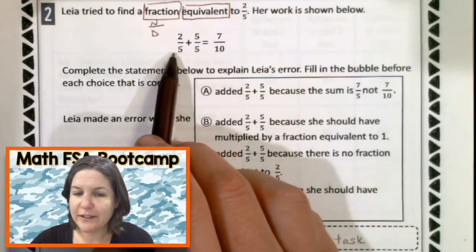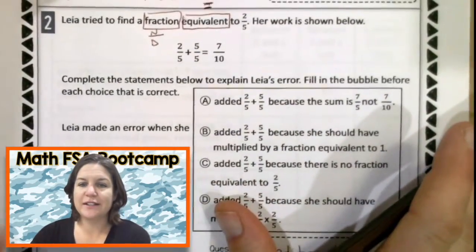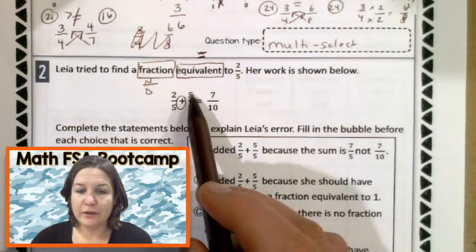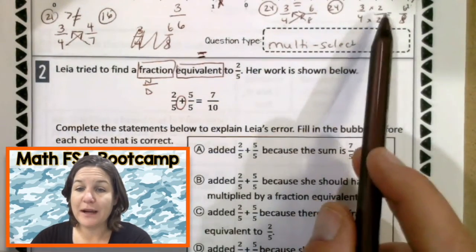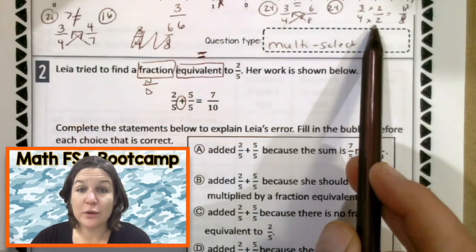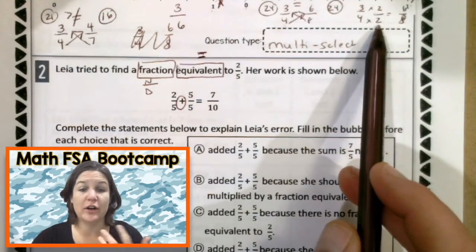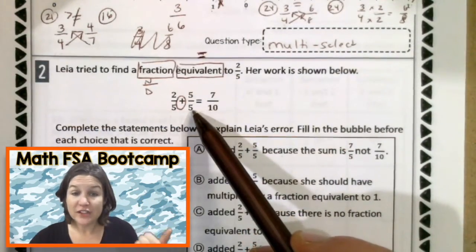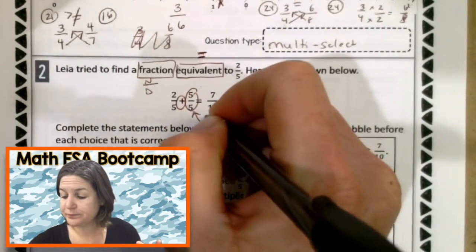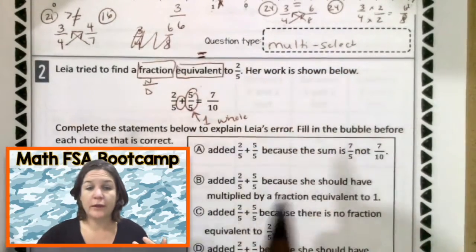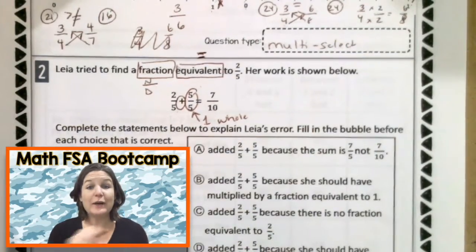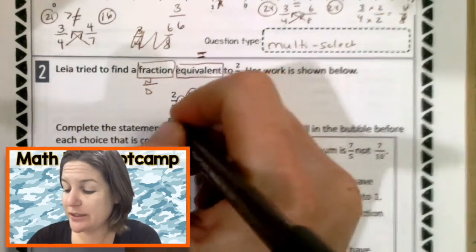But I know that if we're trying to find an equivalent fraction, just like we did for number one, it's not that we are adding a fraction. We need to be multiplying by a fraction that's equivalent to one. Two-halves is equivalent to one because our numerator and our denominator are the same. Five-fifths is also equivalent to one whole. That's good. One whole. But we should not be adding. What operation should we be doing here? Yeah, we should be multiplying them. So this is what's wrong right here. We should be multiplying.